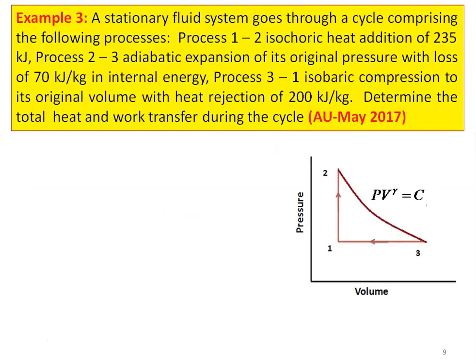Example number 3 is from the May 2017 examination. A stationary fluid system goes through a cycle comprising: Process 1 to 2 — isochoric heat addition of 235 kJ; Process 2 to 3 — adiabatic expansion to its original pressure with loss of 70 kJ/kg of internal energy; Process 3 to 1 — isobaric compression to the original volume with heat rejection of 200 kJ/kg. Determine total heat and work transfer during the cycle.